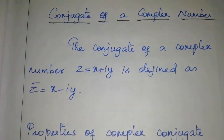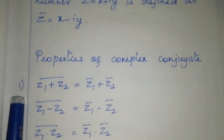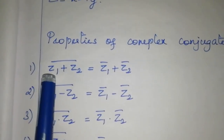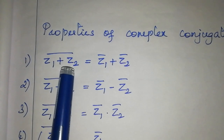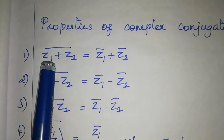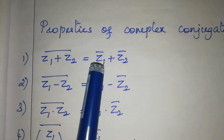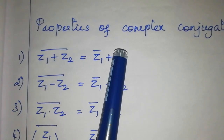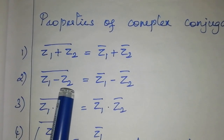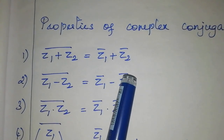Now we are going to see about the properties of complex conjugates. The first property is: the conjugate of the sum of two complex numbers is equal to the sum of their conjugates. That is, (z1 + z2) bar equals z1 bar plus z2 bar. The second property is: (z1 - z2) bar equals z1 bar minus z2 bar.